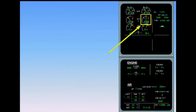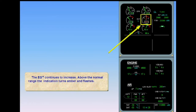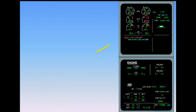On engine 2, the EGT value is increasing and continues to rise. Above the normal range, the indication turns amber and flashes. The amber caution and associated checklist are displayed on the engine warning display. The temperature has continued increasing and on the EGT indicator the indications have turned flashing red.